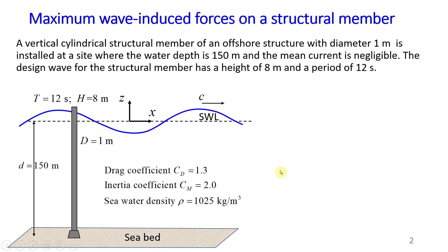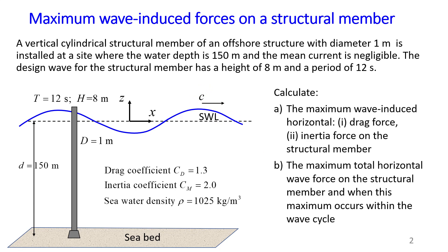We need to calculate the maximum wave-induced horizontal drag force and also the maximum wave-induced horizontal inertia force on the structural member. After that, we need to calculate the maximum total horizontal wave force and also when this maximum occurs within the wave cycle. In my previous video I showed how to calculate the maximum wave-induced horizontal drag force, and today we will be talking about how to calculate the maximum wave-induced horizontal inertia force. In video number three I will show how to calculate the maximum total force and when this will occur within the wave cycle.